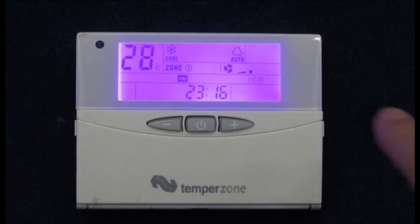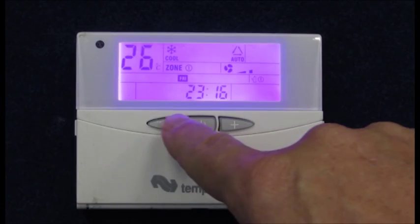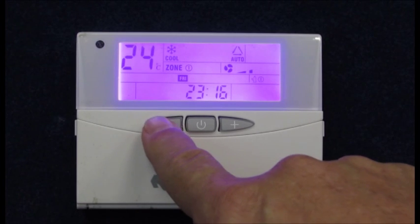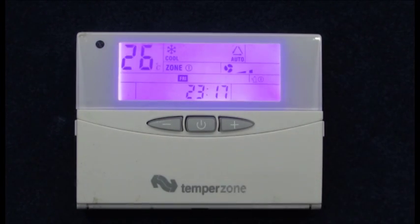Here you can see that the current actual room temperature is displayed, but by pressing the plus or minus buttons, the current set point temperature will appear. Use the same plus or minus buttons to increase or decrease the set point to meet your desired comfort level.